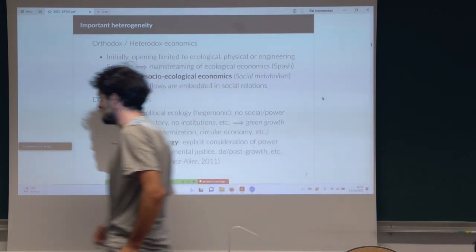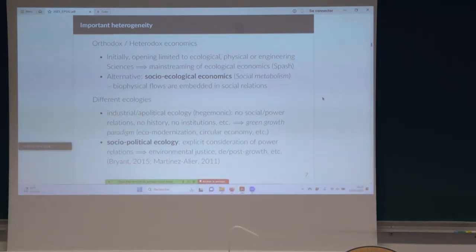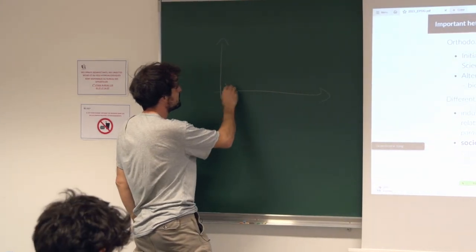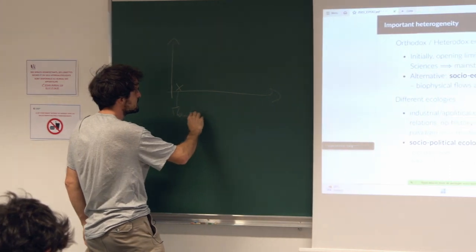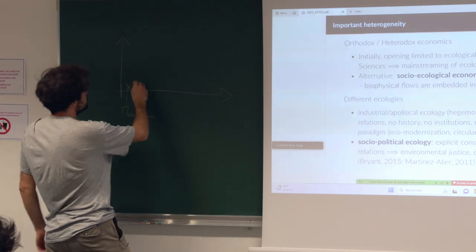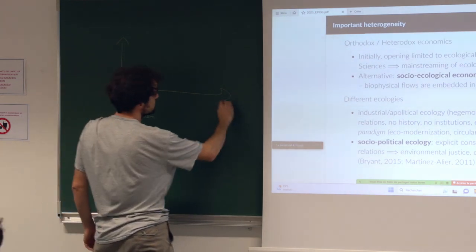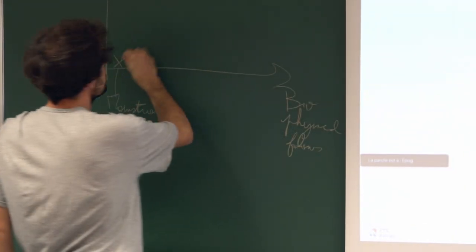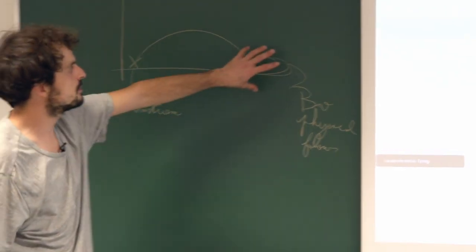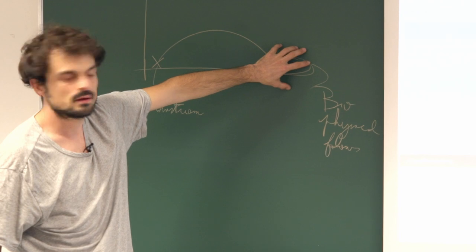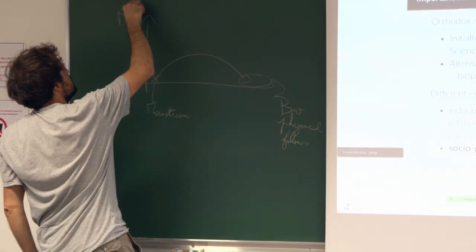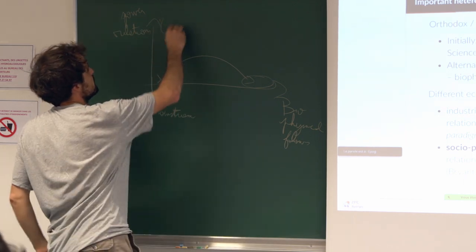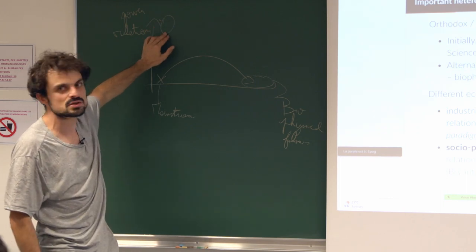Here you find an interesting division. Let me represent this with a graph. The mainstream neoclassical economics is here. The first ecological economics made this move — they took biophysical flows into account — and today the majority of ecological economics is still here. And here, let's say, you have the power relations axis — these are classical social science studies: Marxist, sociologist, and basically all social sciences are here.